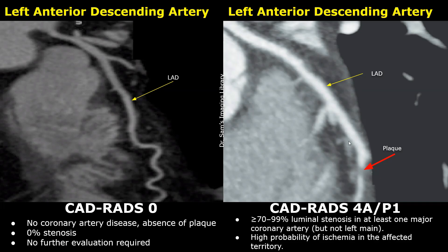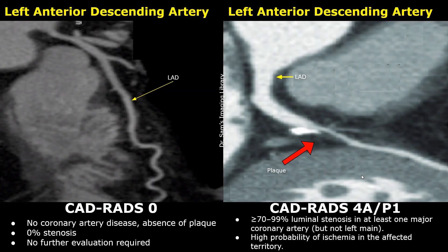This plaque is somewhat subtle but seems to be causing a severe stenosis that almost includes the entire lumen. It was graded as CADRADS-4A P1. This plaque has a mixed density — almost half of it is calcified and the other half is non-calcified and hypodense. The stenosis is severe; almost the entire lumen is stenosed. This was classified as CADRADS-4A P1.